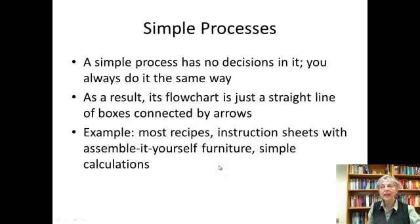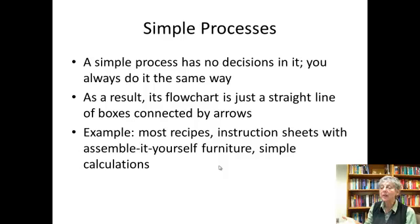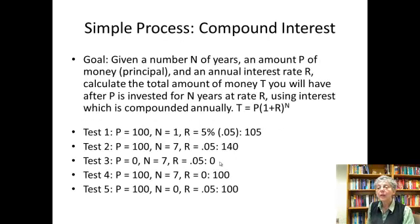I'm going to start demonstrating with a very simple process which has no decisions in it — we always do it the same way. The flowchart is just a straight line of boxes connected by arrows. Examples would be most recipes, instruction sheets for assemble-it-yourself furniture, simple calculations. I'm choosing a simple calculation to do, and it's going to be compound interest.